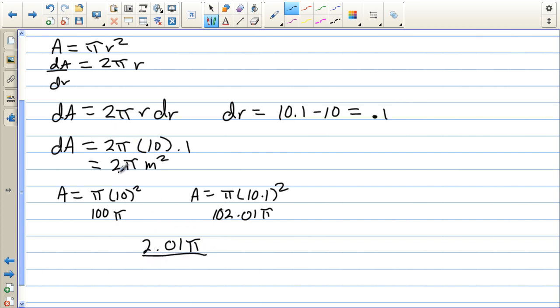But when we use differentials, see, it's an approximation of the change. So the area actually changed 2.01π, but we approximated it at 2π, which is pretty close. The approximate error in this is simply 2.01π minus the 2π, which is the actual answer minus the approximation, which is actually 0.01π meters squared.